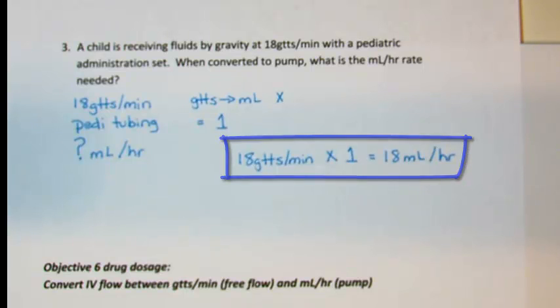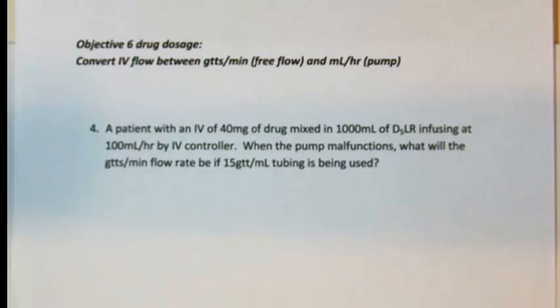The final problem, number 4. A patient with an IV of 40 milligrams of drug mixed in 1000 milliliters of D5LR infusing at 100 milliliters per hour by IV controller. When the pump malfunctions, what will the drop per minute flow rate be if 15 drop per milliliter tubing is being used?